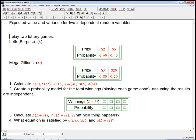So here's the example. I play two lottery games. One is called Lotto Surprise. And we'll have L be the random variable that's how much I win in that game. That has the values of either $2 or $5. I always win something, just to make it simple. The probability of winning $2 is 0.6, the probability of winning $5 is 0.4. I also play another lottery game, Mega Zillions, and we'll have M be the random variable that is the prize winnings for that. That can be either $5 or $20, the probability of winning $5 is 80%, and the probability of winning $20 is 20%.